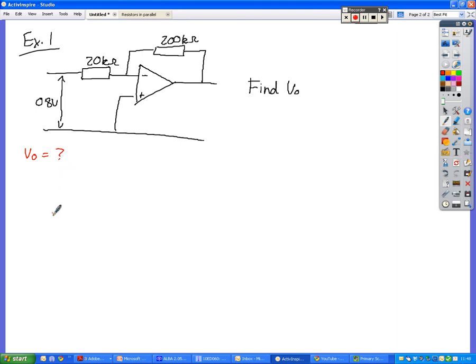Vo, which is the output voltage, which we've got across here. We don't know. We don't know what the output voltage from the amplifier is. V1, which is our input voltage here, is given as 0.8 volts. R1. Which of these resistors is R1?